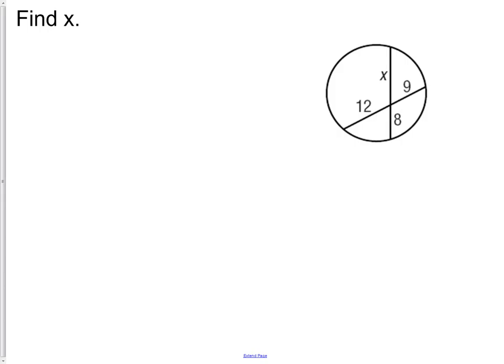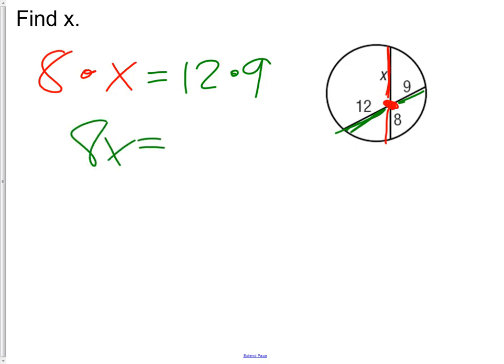Our next question. We have two secants that cross inside the circle. In this situation, we take everything based off of the center. So we have 8, the segment from here to the center, times x, which is from the center to here, equal to 12 times 9. So we have 8x equals 108. Dividing by 8, we get x equals 13.5.